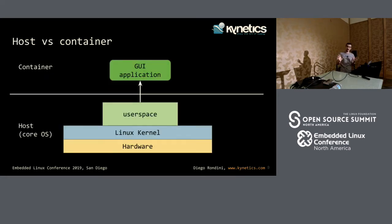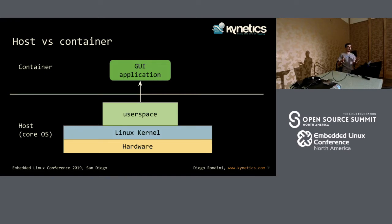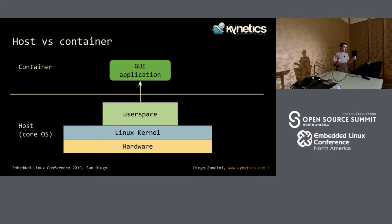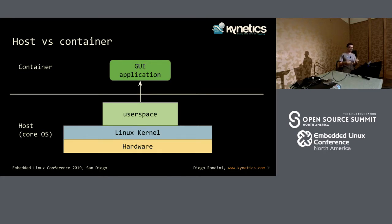Here's a simple diagram about what we want to do. We have an operating system — call it the core OS — running on the host. The kernel is part of this operating system, and the user space, including the Docker daemon and Docker runtime, is also part of the core OS. But then we want to run our graphical application inside the container.